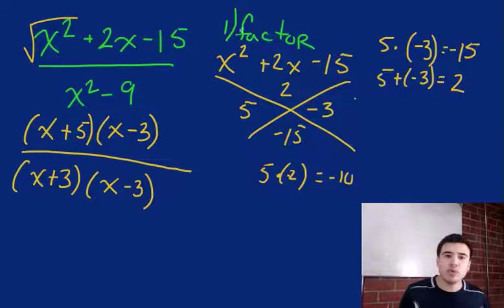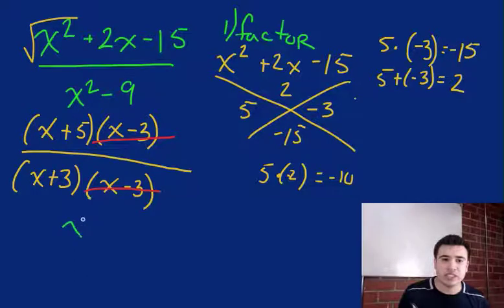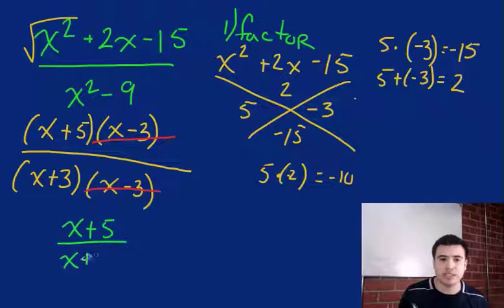See, number one rule: factor. Why? Because now all you have to do is eliminate similar binomials, ones that are the same. x minus 3 and x minus 3 are the same, so we can just cancel those right out. So now, if we look at our answer, we'll see that our answer is just x plus 5 over x plus 3. And that's your answer and you went ahead and simplified it.